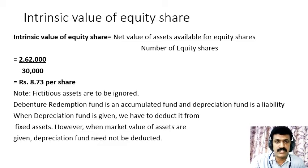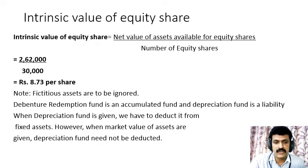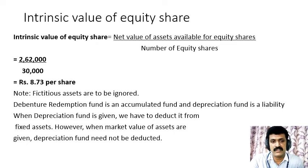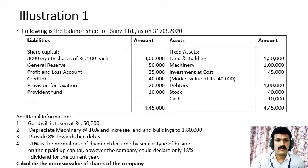Intrinsic value per share = ₹2,62,000 ÷ 30,000 shares = ₹8.73 per share. To summarise: fictitious assets are ignored; the debenture redemption fund is an accumulated fund and should be ignored; depreciation fund is a liability and should be deducted from fixed assets, but when market value of assets is already given, depreciation fund need not be deducted separately.